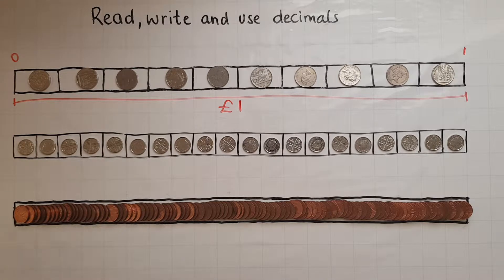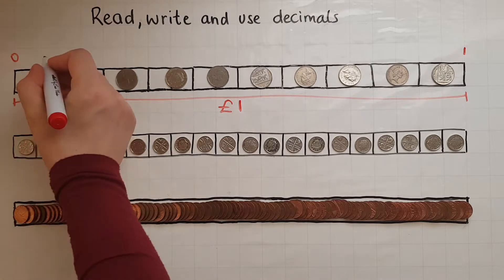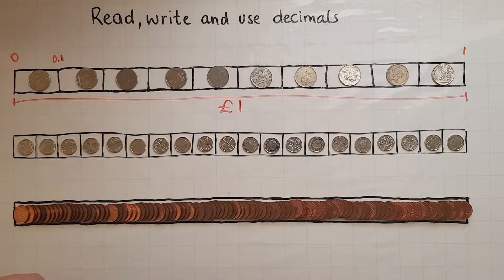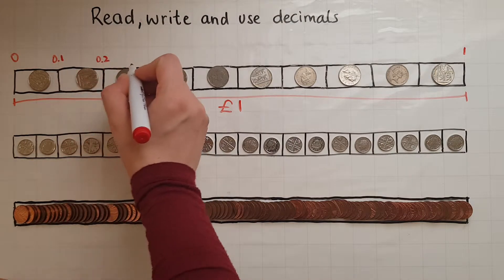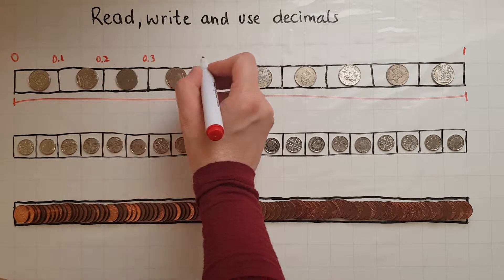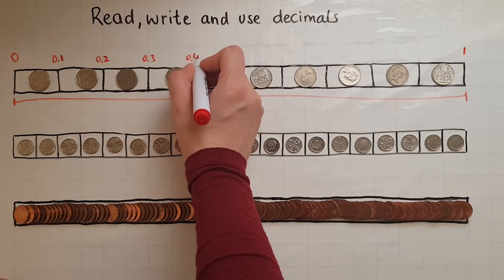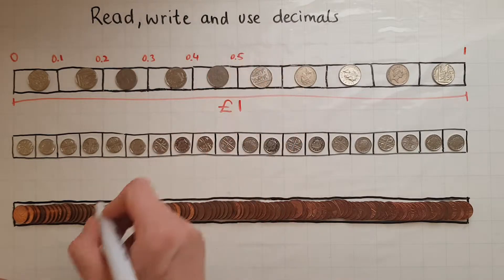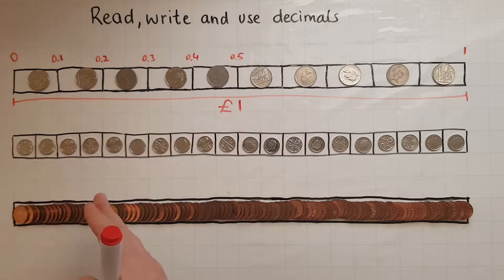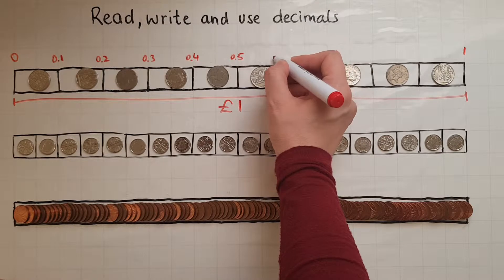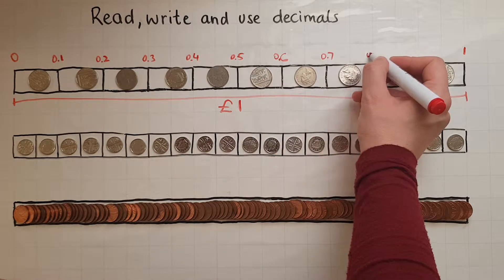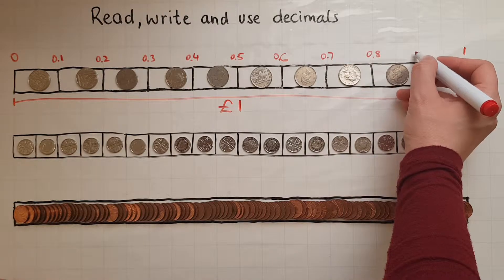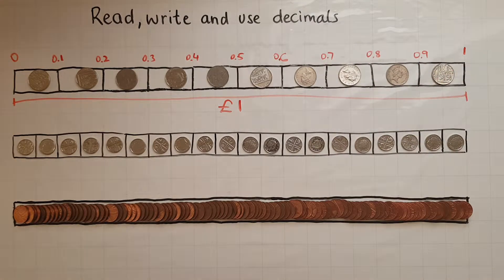We start with zero, and then one 10p coin is 0.1 parts of the whole pound. That is also 0.2, 0.3, 0.4, 0.5 — five of them, or half of it, half of the pound. Then 0.6, 0.7, 0.8, 0.9, and 10 will make a whole pound.